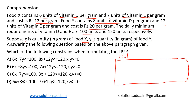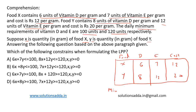The table has Food X and Food Y, with columns for vitamin D, vitamin E, and cost. Food X has six units of vitamin D, seven units of vitamin E, and a cost of 12 per gram. Food Y has eight units of vitamin D, 12 units of vitamin E, and a cost of 20 per gram. The objective is to meet minimum daily requirements: 100 units of vitamin D and 120 units of vitamin E.